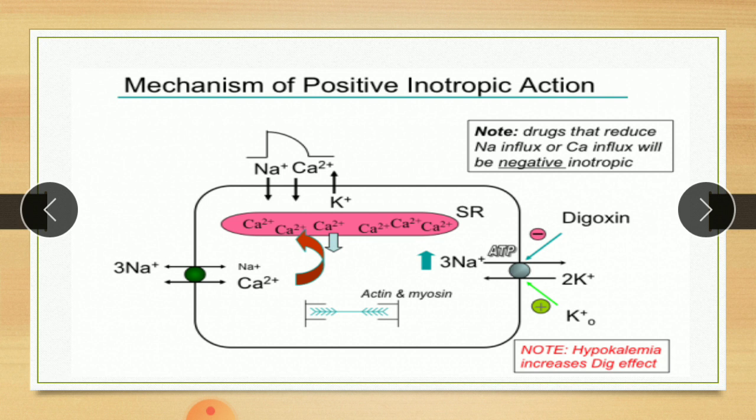Regarding the mechanism of action of digitalis or cardiotonic: digitalis compounds are potent inhibitors of the cellular sodium-potassium ATPase pump. In this diagram, there are two pumps shown. The first one is the sodium-potassium ATPase on the right-hand side. This sodium-potassium pump moves sodium ions out of the cell and brings potassium into the cell, transporting three molecules of sodium for every two potassium ions that enter the cell.